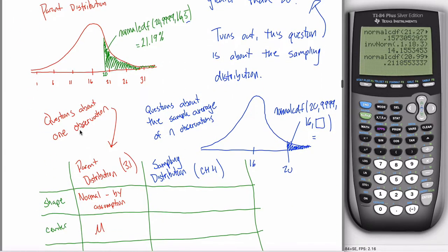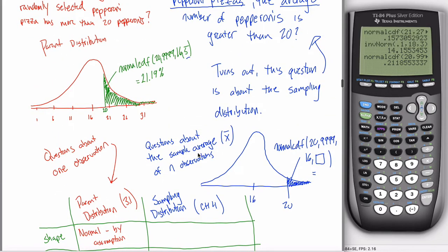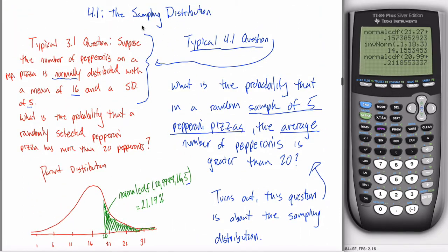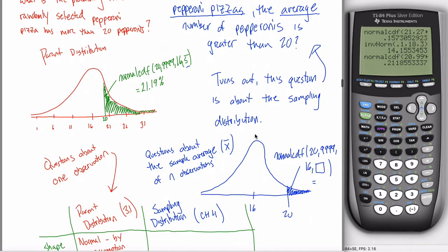So in Chapter 3 the questions are about one observation; in Chapter 4 the question is about the sample average. We have a symbol for the sample average: x-bar. We haven't seen that since section 1.6, but when you have a sample, n represents the number of observations in that sample and x-bar represents the average of that sample — not to be confused with mu, the population average. X-bar is the sample average.